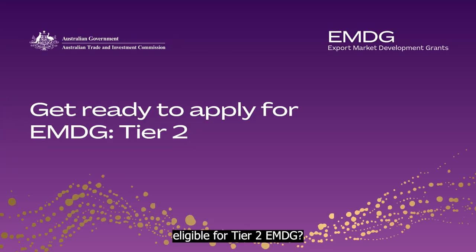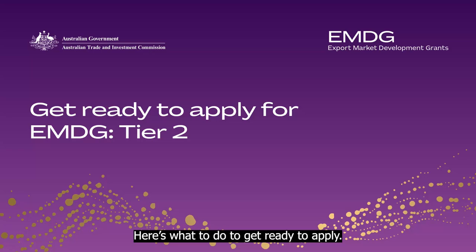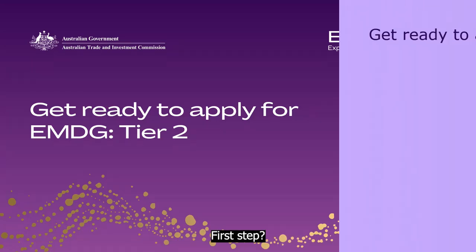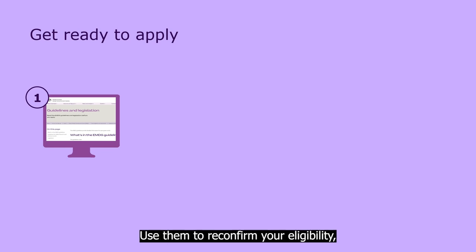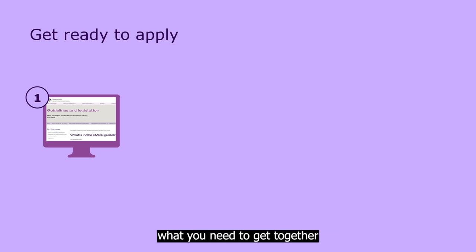Are you confident you're eligible for Tier 2 EMDG? Here's what to do to get ready to apply. First step, read the grant guidelines. Use them to reconfirm your eligibility and to see in writing what you need to get together for your application.